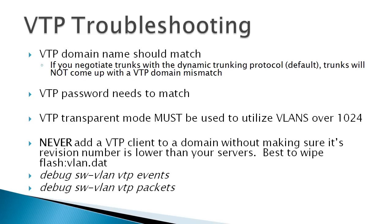The best practice when adding a switch into a production network that runs VTP is to delete the VLAN database, which is stored in flash — specifically flash:vlan.dat — and then reload your switch. If you run into problems, a couple of useful debug commands are: debug sw-vlan vtp events and debug sw-vlan vtp packets — those will show you a lot of useful information about VTP.